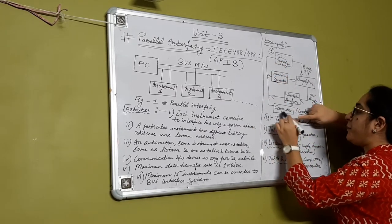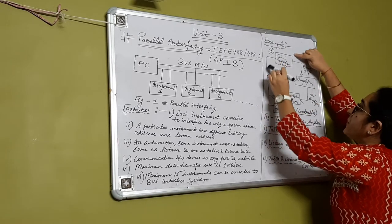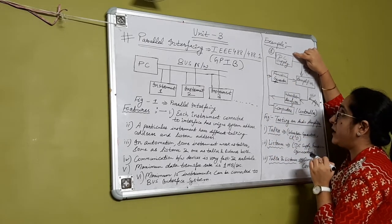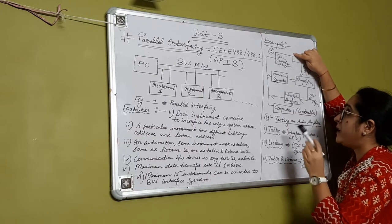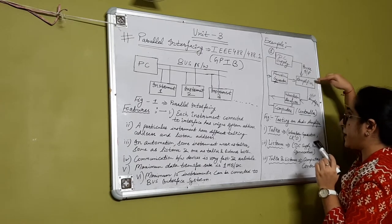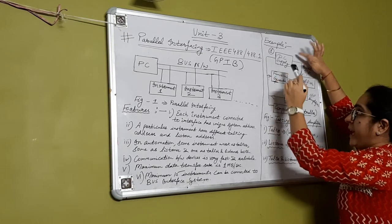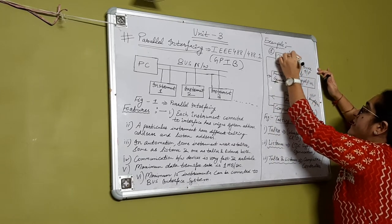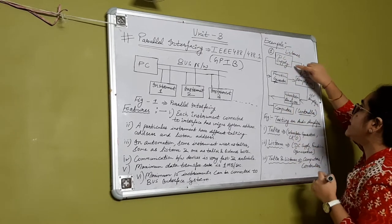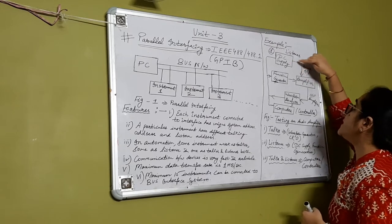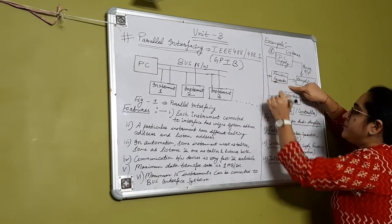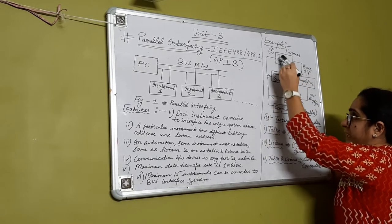The computer sends the command to the DC supply to start the process, select the desired voltage range, and give the power supply to the amplifier. The DC supply acts as a listener at this point. The DC supply receives the command, starts the process, and gives the power input to the amplifier.